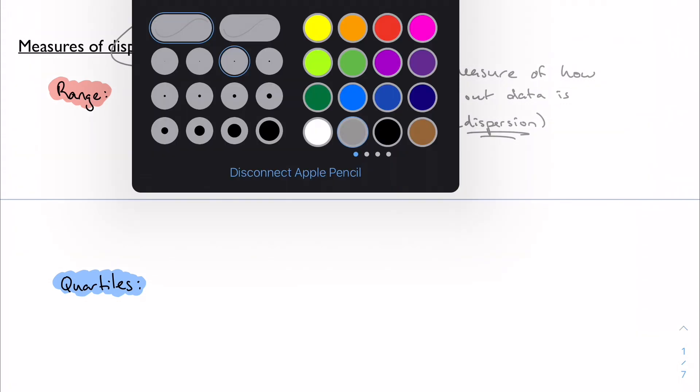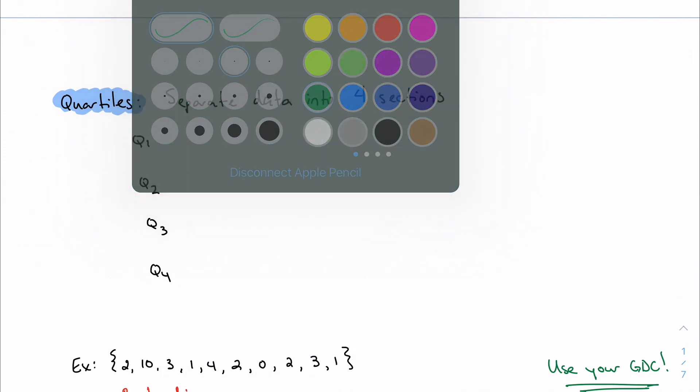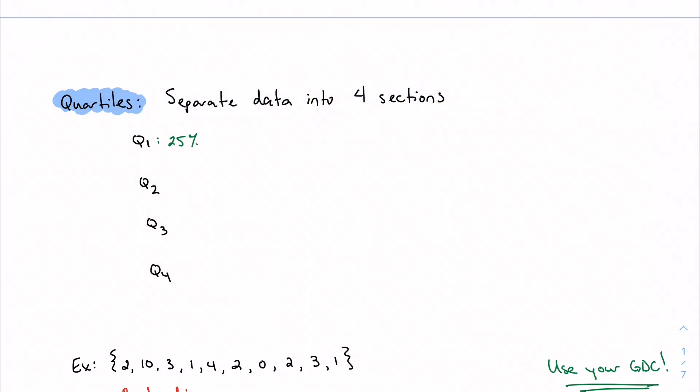For quartiles, now this is where it might be new, which is why I highlighted it in a different color. Quartiles allow me to break down this dispersion even farther and maybe be a little more specific with it. So quartiles are going to separate the data into four sections. So we have quartile 1, quartile 2, quartile 3, quartile 4. So quartile 1 has 25% of the data below it.